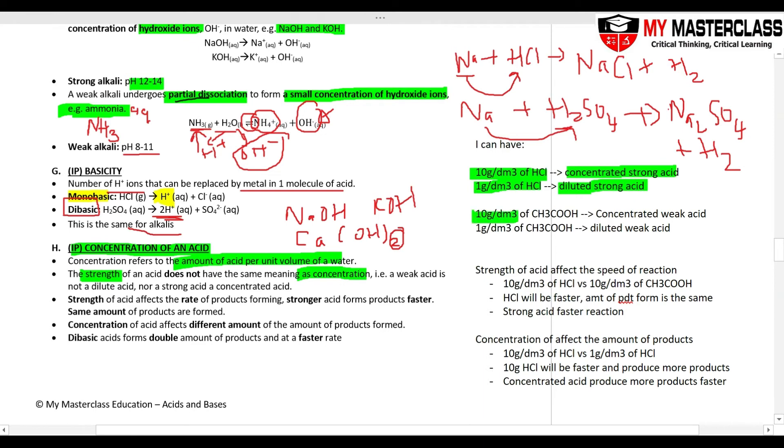I can also have 10 grams of ethanoic acid. Ethanoic acid is my weak acid. This is your concentrated weak acid. 1 gram of ethanoic acid, this is your diluted weak acid. pH 4, 5, 6 in both cases.